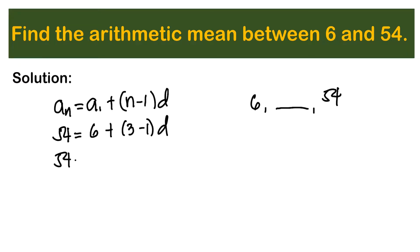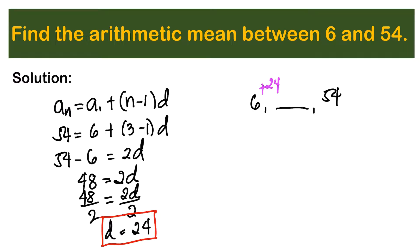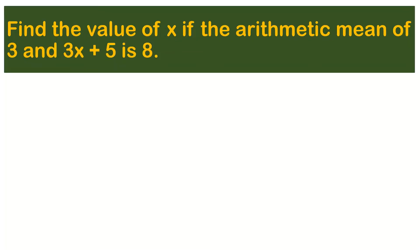Simplifying: 54 minus 6 equals 2d, so 48 equals 2d. Dividing both sides by 2 gives d equals 24. Adding 24 to 6 gives 30, and 30 plus 24 gives 54, which confirms our answer is correct. Therefore, the arithmetic mean between 6 and 54 is 30.